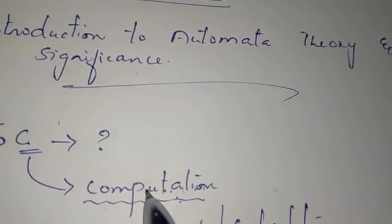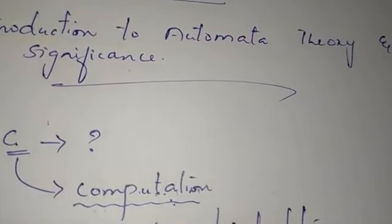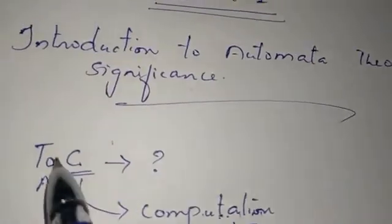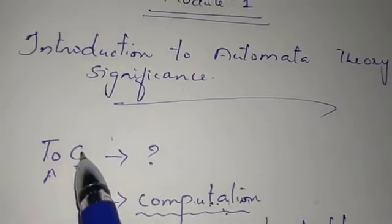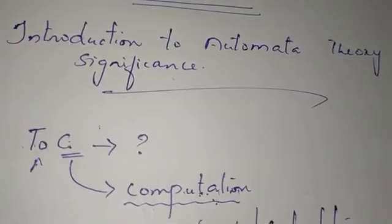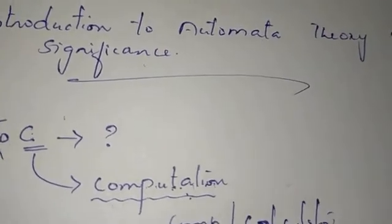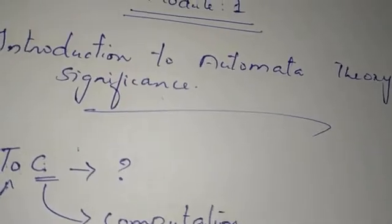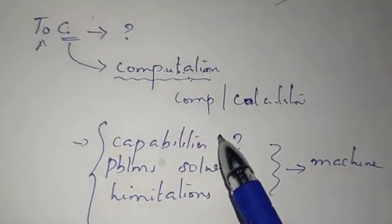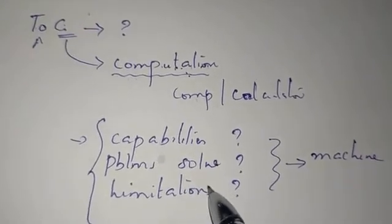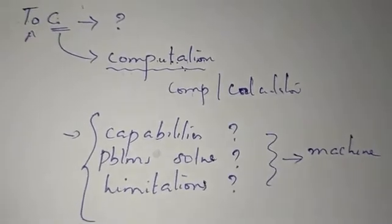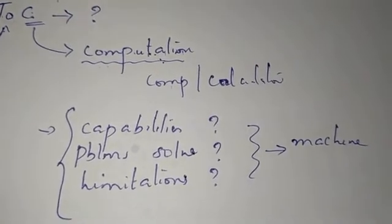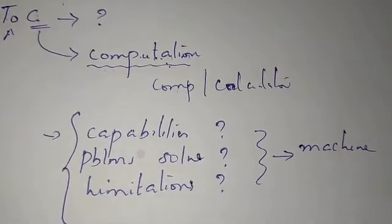We use a machine to model. If you are interested in the model, you can learn Theory of Computation. We use a machine to model, and in this case, we perform some responsibilities. What are the applications? What problems do we solve? What limitations should we try to solve? If you come through a machine, you will try to solve any work.